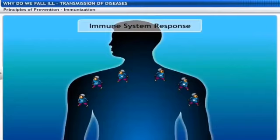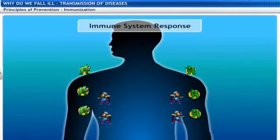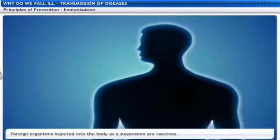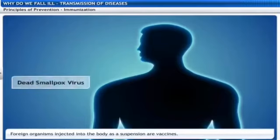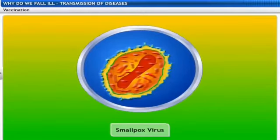There are special immune system responses in the body. The next time a particular microbe or its close relative enters the body, the immune system responds with greater vigor and eliminates the infection even more quickly than the first time. The foreign organisms injected into the body act as vaccines. For the first time it is difficult as antibodies are getting developed. Dead smallpox viruses are injected into the body to fool the immune system and stimulate antibody growth to make it more effective.